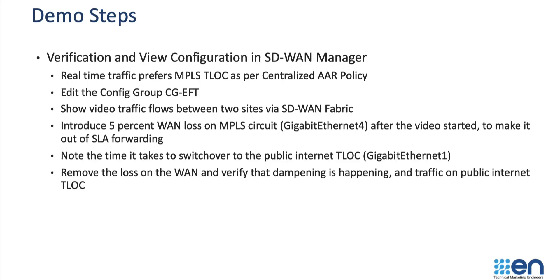Here are the high-level demo steps. We'll use simulate flows to verify our AIR policy is working and that the traffic is using MPLS T-Lock gigabit 4. Then we will edit our config group that is already configured with enhanced application-aware routing. In this video, we are setting up the configuration in aggressive mode.